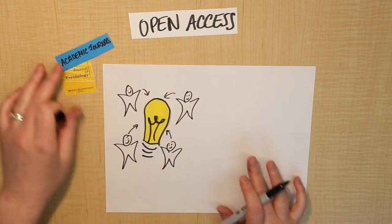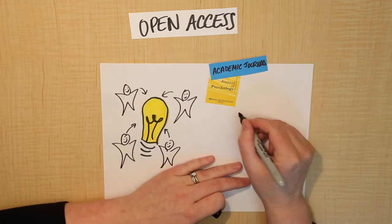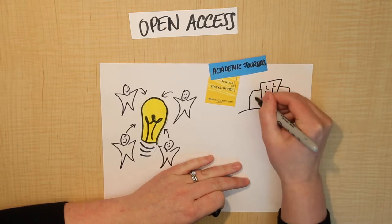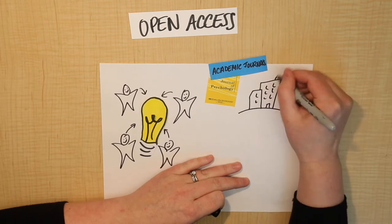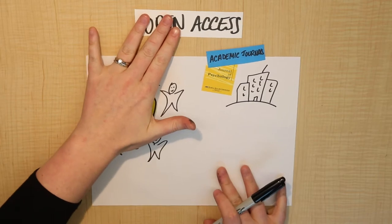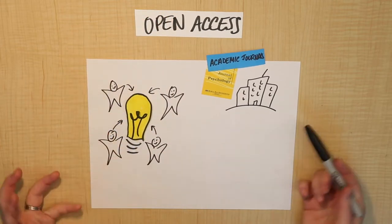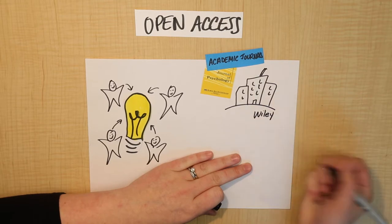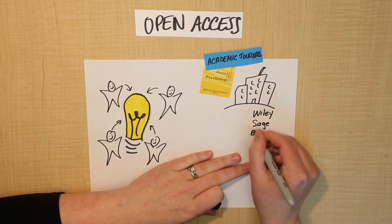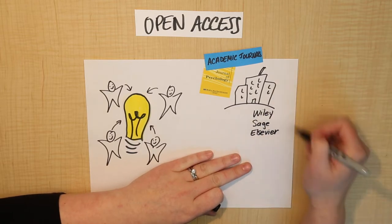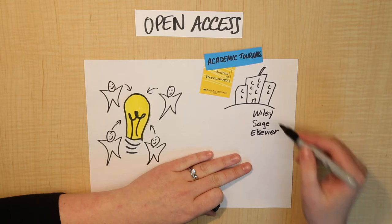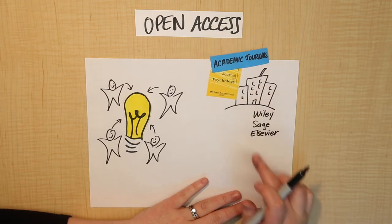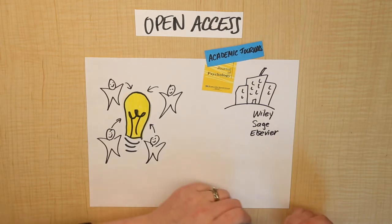For the most part, academic journals are published either by universities or by relatively large companies that make money off of publishing, so like publishing houses. For example, some journals might be published by a university, like University of British Columbia. Other ones might be published by an academic publisher that has a name, like Wiley is an example, Sage is an example, Elsevier is an example. These are all examples of traditional publishing companies that have been around for a very long time and that for the most part publish academic journal articles and books as well.